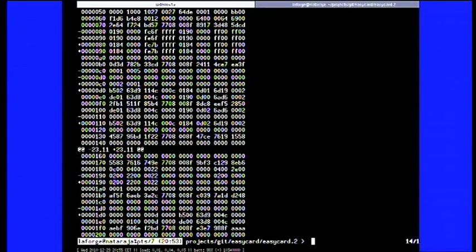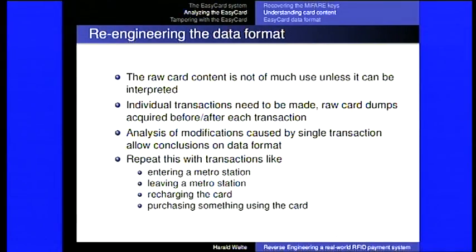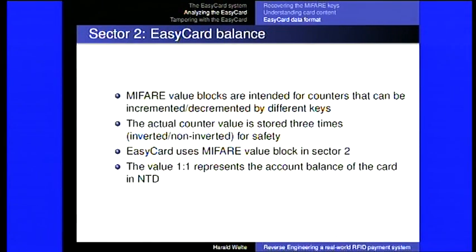Doing this with lots of transactions, you get an idea of what changes where. When you enter the same MRT station using the same toll gate, you see some numbers are the same — so that must be the specific reader identifier or station code representing that particular MRT station. You start to get a feeling for the data structure.